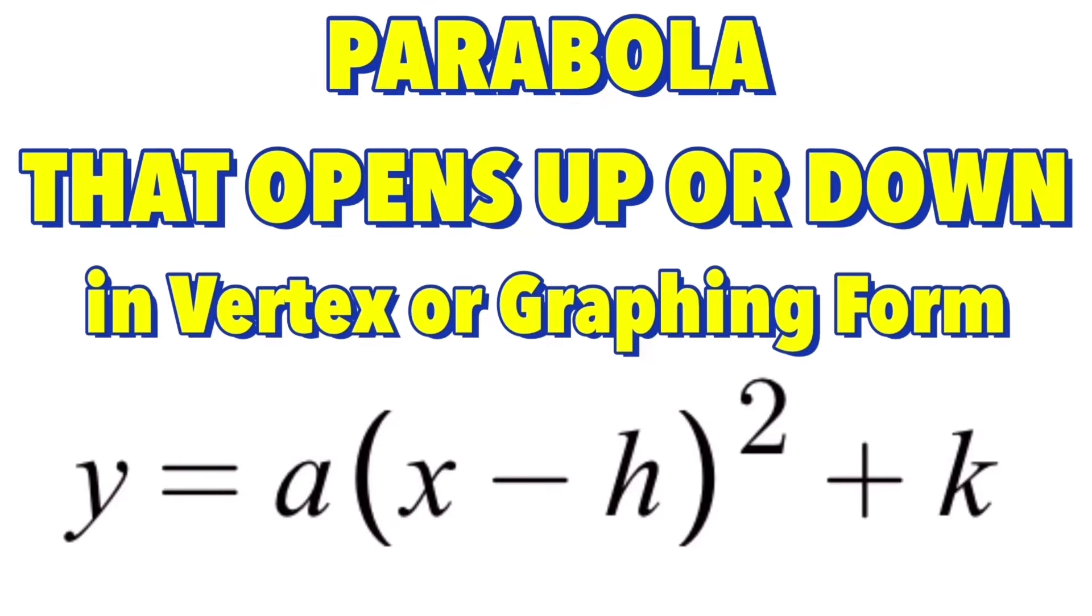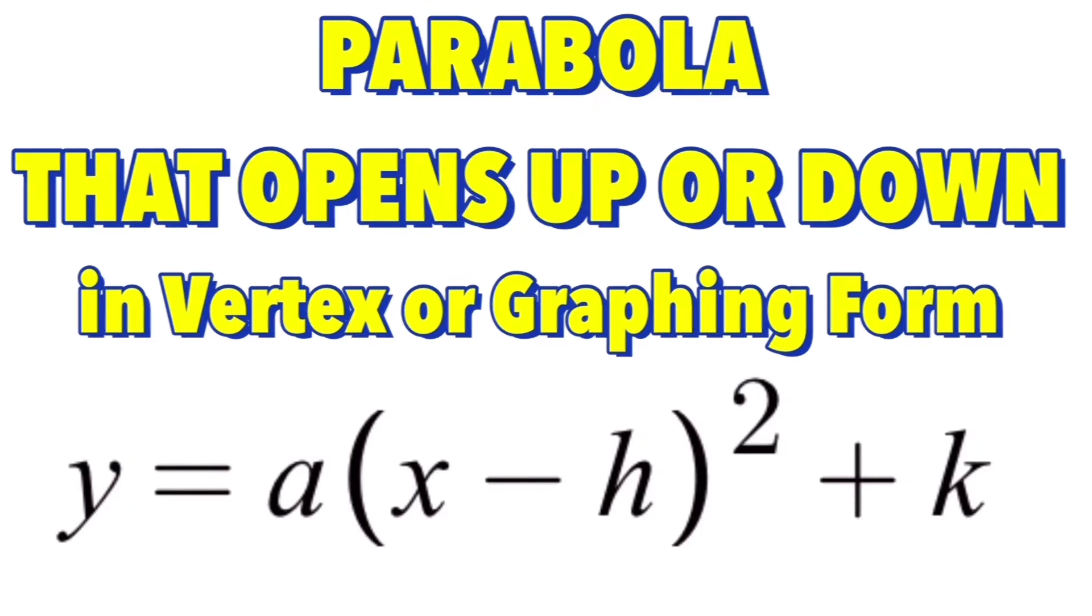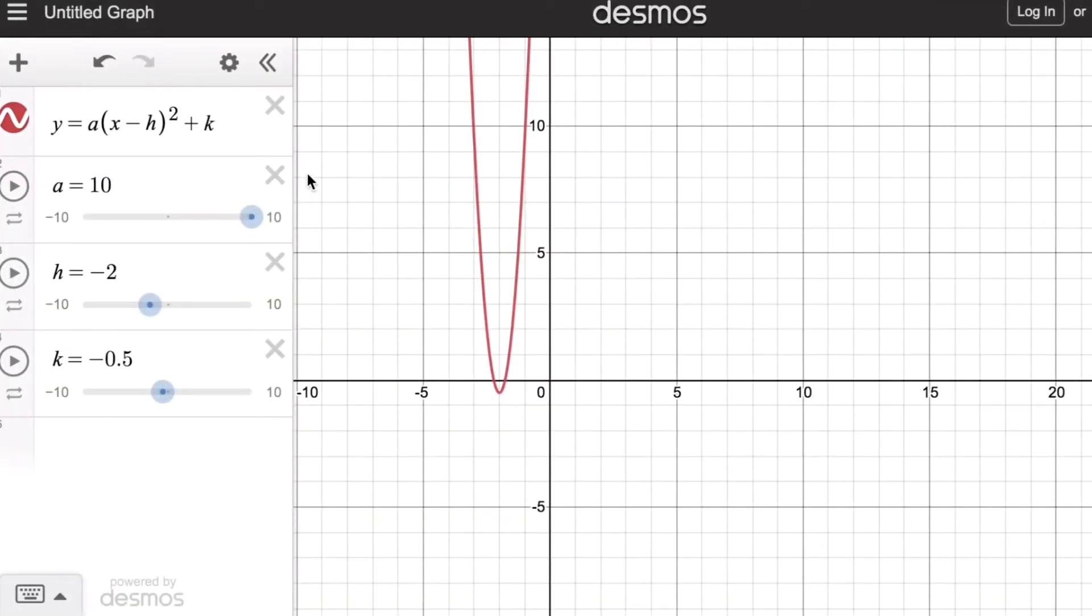Now let's look at the parameters a, h, and k in this equation. We remember that if the value of a is positive, the graph opens upward.